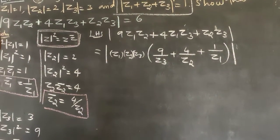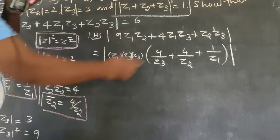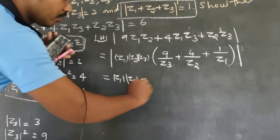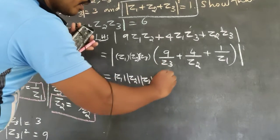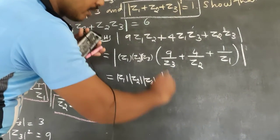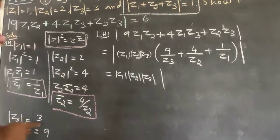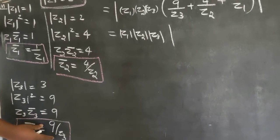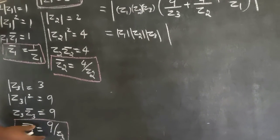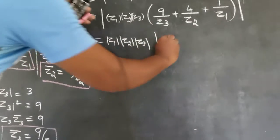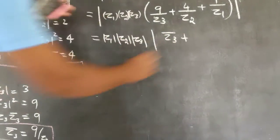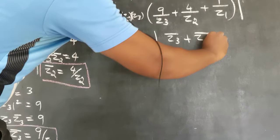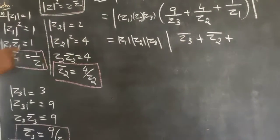Taking the modulus separately, we get modulus of Z1Z2Z3. Now substituting: 9 by Z3 equals Z3 bar, 4 by Z2 equals Z2 bar, and 1 by Z1 equals Z1 bar.